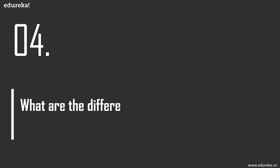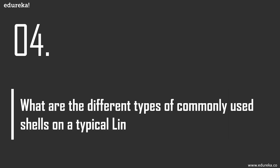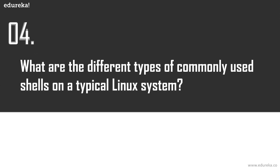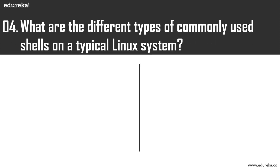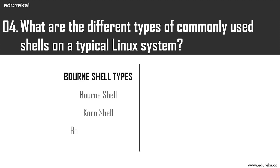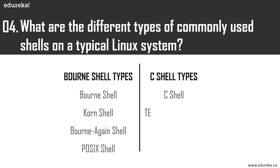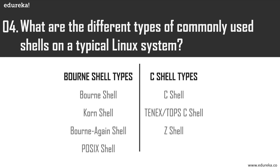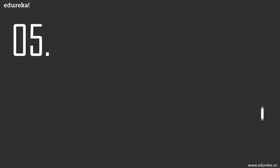What are the different kinds of commonly used shells on a typical Linux system? There are two main kinds: the Bourne shell and the C shell. Common derivatives of the Bourne shell include the regular shell, the Korn shell, Bash (Bourne Again Shell), and the POSIX shell. Common C shell types include the C shell, the tcsh, and the Z shell.